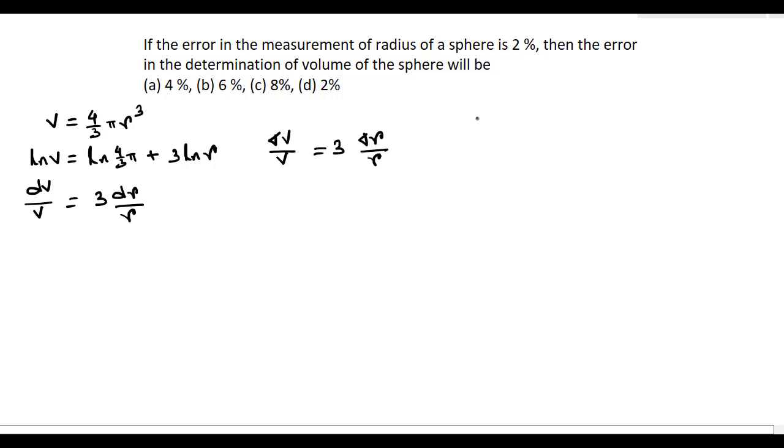Here, delta r by r into 100 percent is equal to 2 percent as the error in the measurement of sphere is 2 percent.